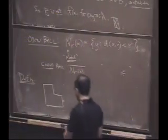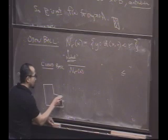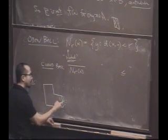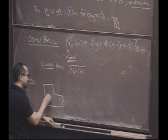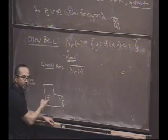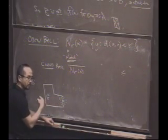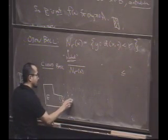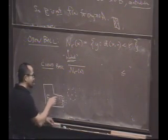Well, what that means is you give me any ball around this point, and no matter which ball I take, I will always have points of what? Of this set in it, in the ball. That's what it means to be a limit point. This creature is not a limit point because there is a ball that doesn't even touch E.